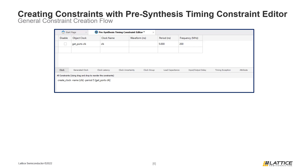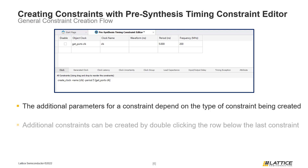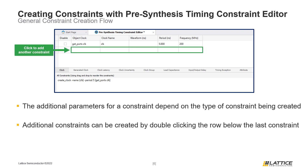Once a reference object has been added for a constraint, the final step is to finish populating the other entry fields in the constraint editor area. Each row in the constraint editor area corresponds to a single constraint being created, and the individual columns correspond to a parameter for that constraint. Multiple constraints can be created in the same constraint tab — to begin creating another constraint of the same type, select the row below the last constraint generated. If any changes have been made, an asterisk will appear next to the name of the tab.